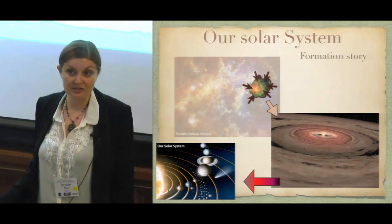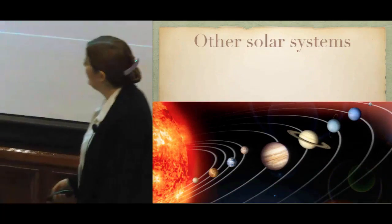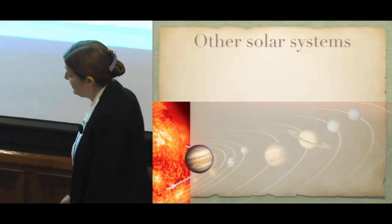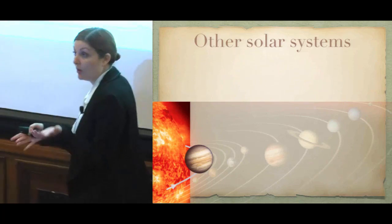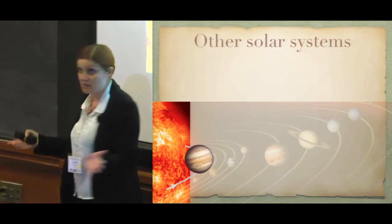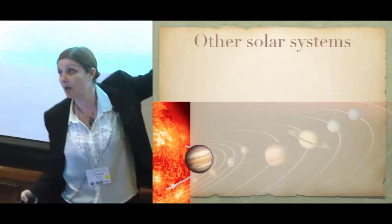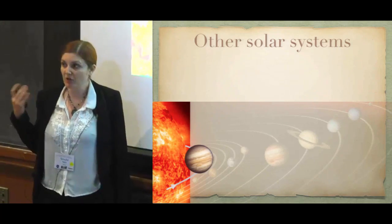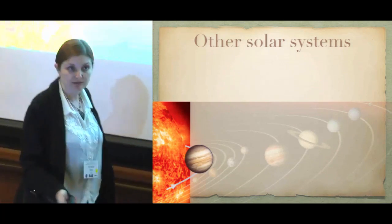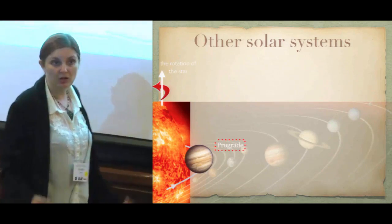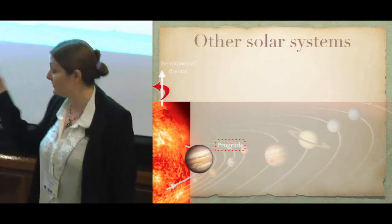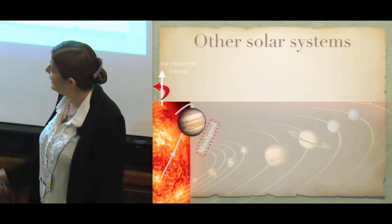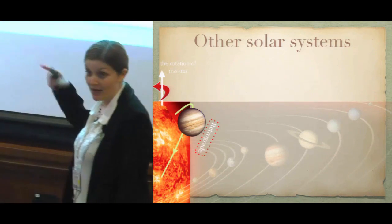If planets form in the disk, we should expect all planets to be mostly coplanar, all orbiting in the same direction as the star spins — because there is one angular momentum in the system. This worked very well for our solar system. But when we look at other solar systems, the first thing we notice is that there are some gas giants extremely close to their host star — even one-day orbits — which requires forming them far away and bringing them in.